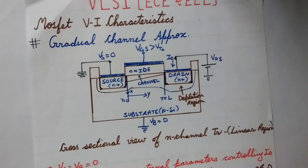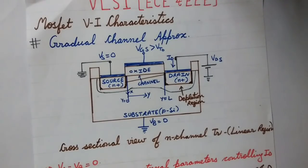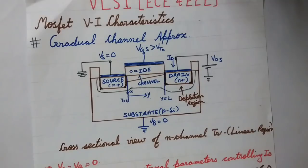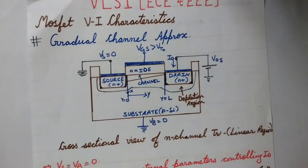Before drawing the VI characteristics for the MOSFET, we will first derive the equation of the drain current, since this equation will play a major role in drawing these characteristics. This MOSFET current-voltage relationship analysis is actually a three-dimensional problem, which is quite complex. To reduce it to a single dimension we make some approximations, using the gradual channel approximation approach to derive the current-voltage relationship and the ID current equation.